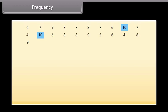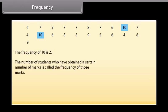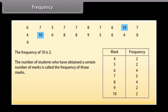See that two students have scored 10 marks, so the frequency of 10 is 2. The number of students who have obtained a certain number of marks is called the frequency of those marks.